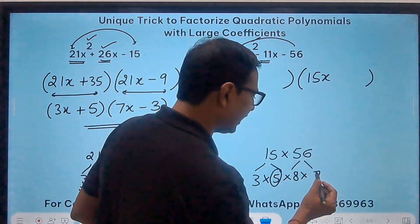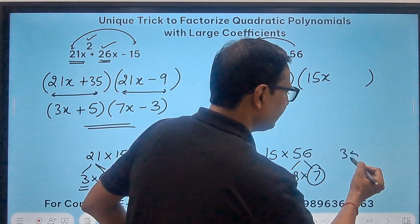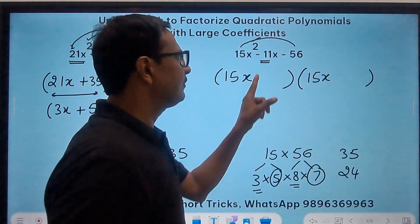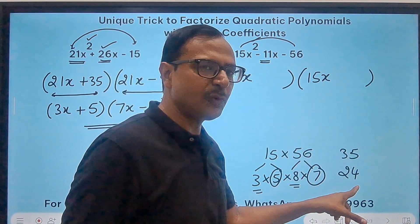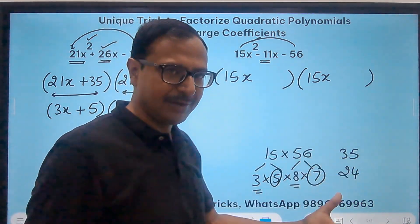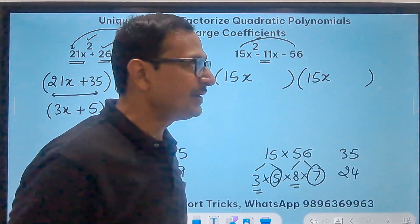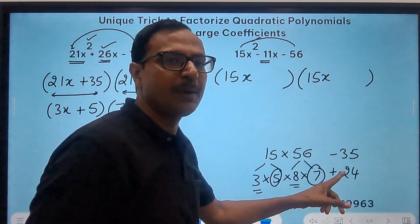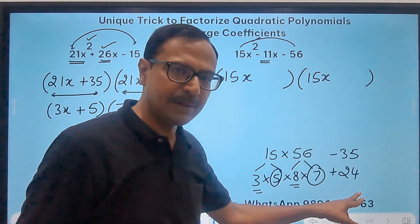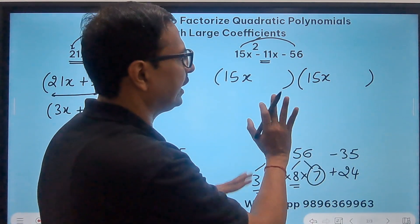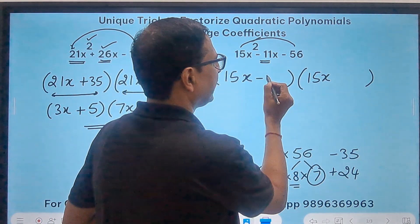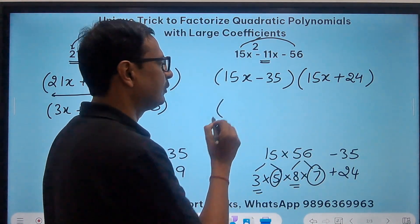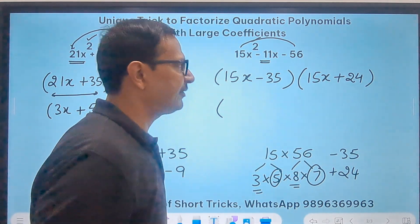So if you do 5 and 7 this is 35, and when you do 8 and 3 you have 24, and see the difference between 35 and 24 is 11, and it works. So negative 11 means larger one is negative and smaller one is positive. So minus 35 and plus 24. So you can write them in any order in the brackets, negative 35 and plus 24.